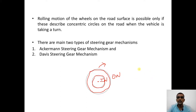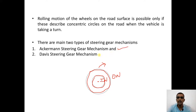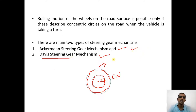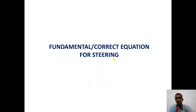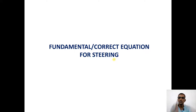There are two kinds of steering gear mechanisms commonly used in vehicles: the Ackerman steering gear mechanism and the Davis steering gear mechanism. In this lecture we will focus only on the Ackerman steering gear mechanism, but we will also come to know the disadvantage of the Davis steering gear mechanism. Before going into the Ackerman mechanism, we need to know the fundamental or correct equation for steering — only a mechanism that satisfies this equation will give us a satisfactory steering experience.